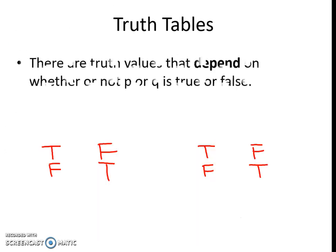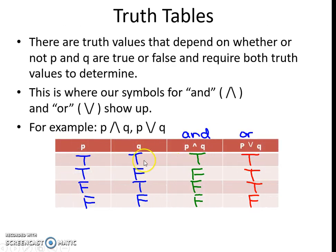If P is true and Q is true, then P AND Q is true, and P OR Q is true. If P is true and Q is false, then P AND Q is false — because both must be true — but P OR Q is true, since at least one is true. If P is false and Q is true, P AND Q is false, but P OR Q is true. If P is false and Q is false, then P AND Q is false and P OR Q is false.